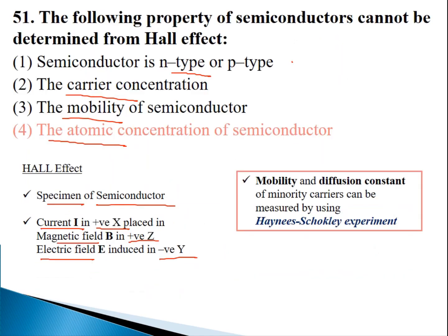If we want to measure the mobility and diffusion constant of minority carriers, we use the Haynes-Shockley experiment. For majority carriers, we use the Hall effect. This question has been asked in IES and other exams.